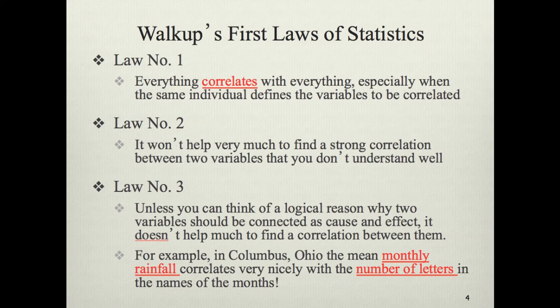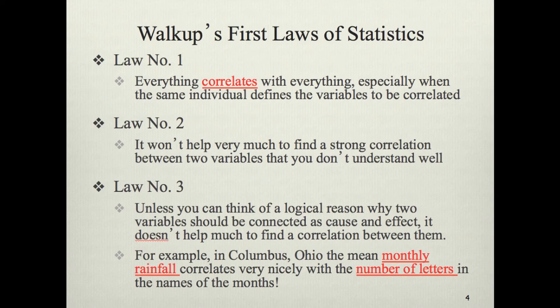Law number three: unless you can think of some logical reason why two variables should be connected as cause and effect, it doesn't help much to find a correlation between them. The inferences we can make about causality depend on three things: are the two variables related? Does one temporally precede the other? And does any third variable explain the relationship between them? That last one is the most difficult to rule out. Even in a well-designed experiment, it's nearly impossible to rule out that some third variable affected the relationship between an independent variable and a dependent variable.